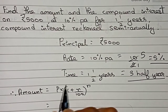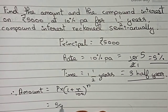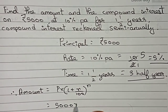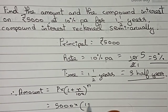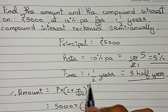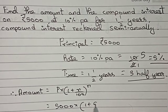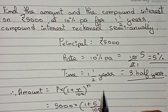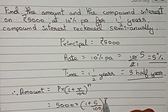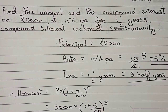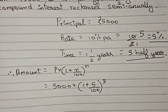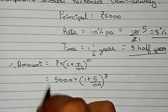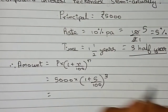Substituting the values: Amount = 5000 × (1 + 5/100) to the power 3.